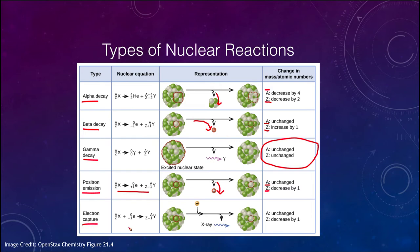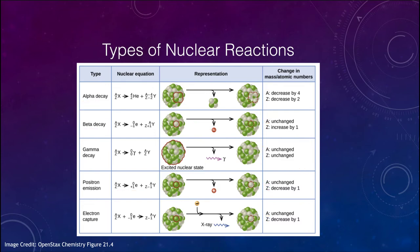Finally, we can also capture an electron. In those cases, an electron is captured and that will take a proton and convert it into a neutron. This is similar to positron emission — it does exactly the same thing in that the atomic mass remains unchanged and the atomic number decreases by one. In both of these cases, we are converting a proton into a neutron.